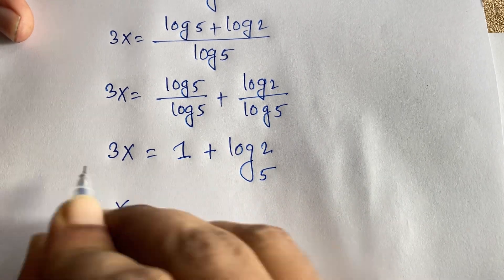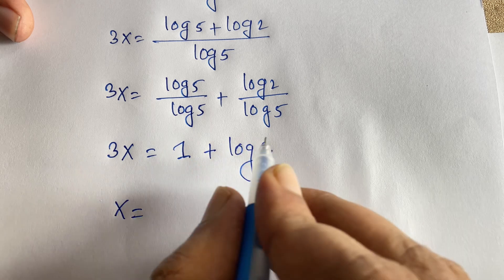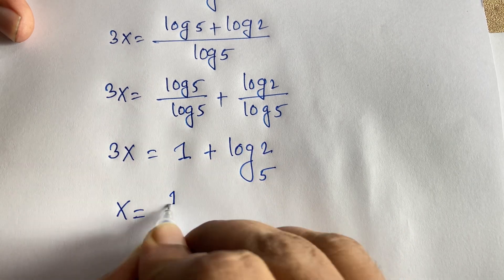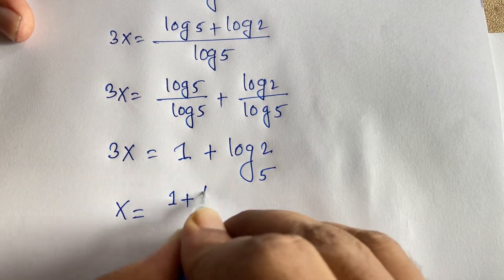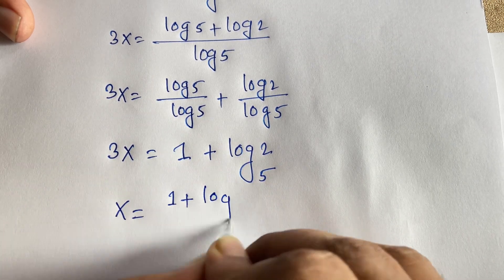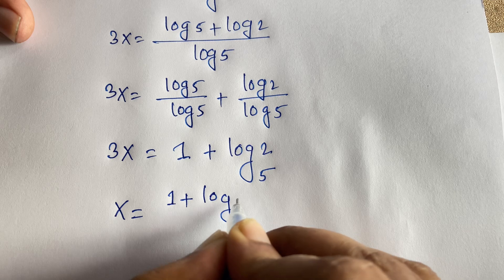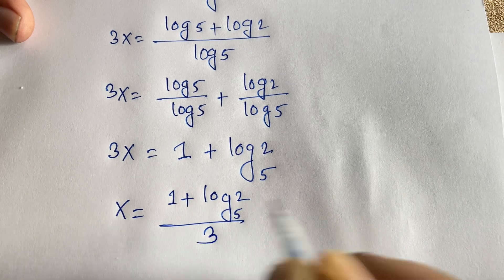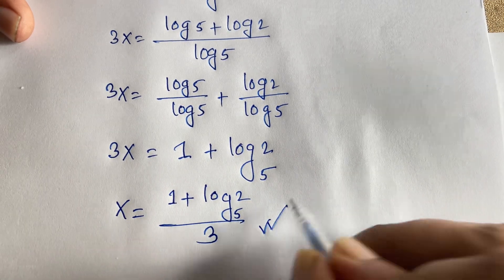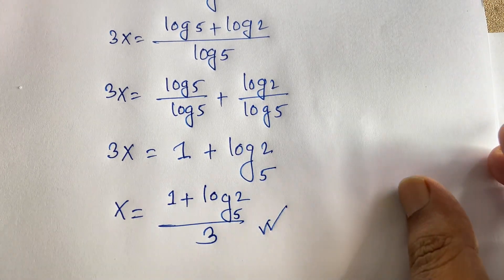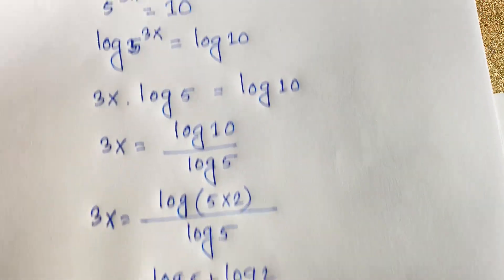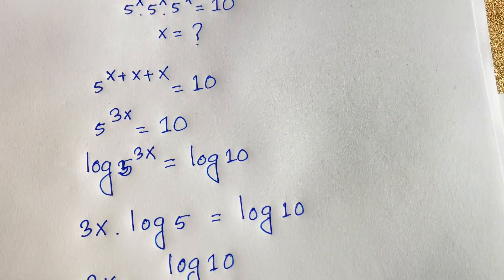Dividing both sides by 3, we find x is equal to (1 plus log base 5 of 2) divided by 3. This is the value of x in this mathematical question.